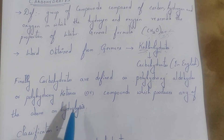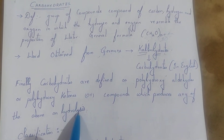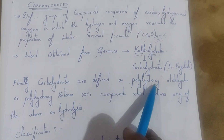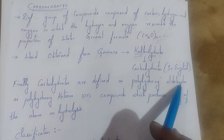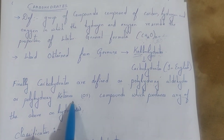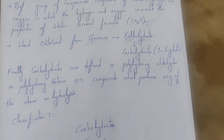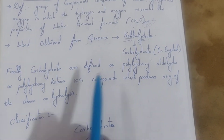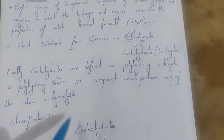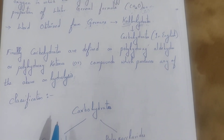The compounds which on hydrolysis produce polyhydroxy aldehydes or polyhydroxy ketones are known as carbohydrates. Or compounds which contain polyhydroxy aldehydes or polyhydroxy ketones are also known as carbohydrates.